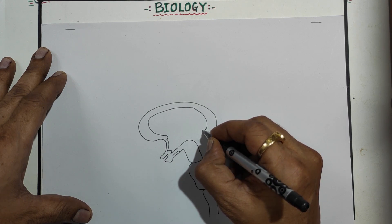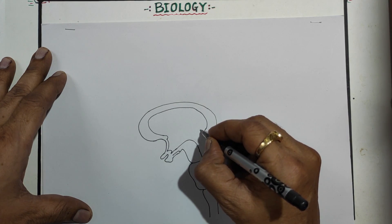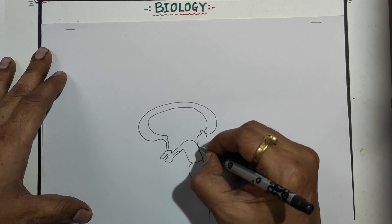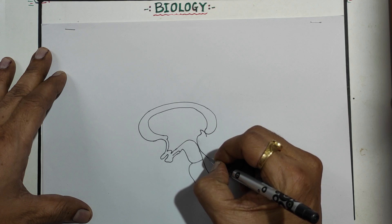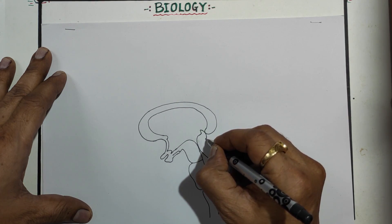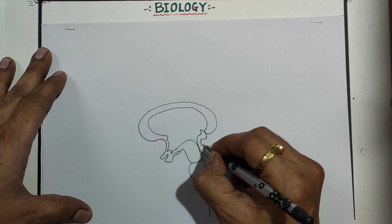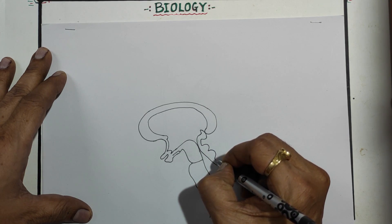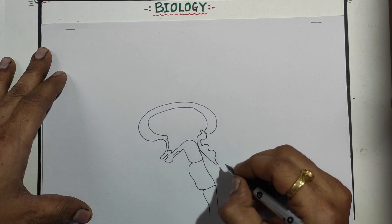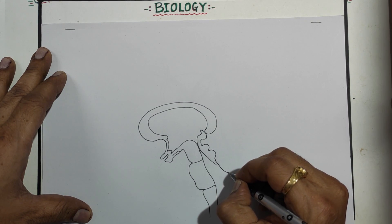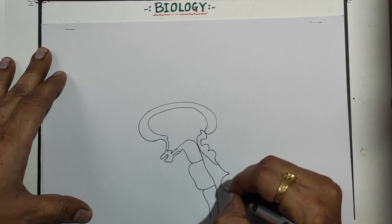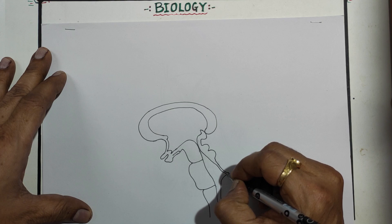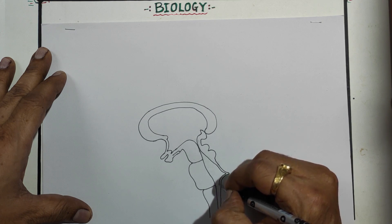Here also you have to draw one bird-like structure. Make beak like, then bring it back here. This is suppose the head-like structure. Here draw two hump-like structures and bring it back. This will bring it here. Then bring it down. Corresponding to this another line. Bring it down.